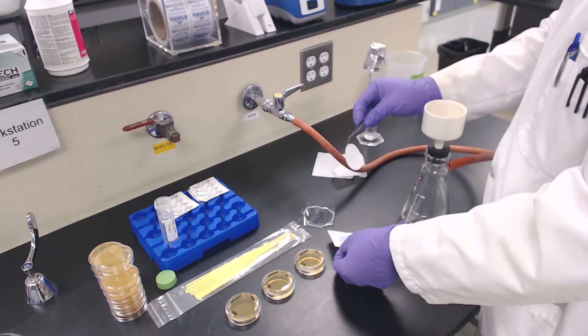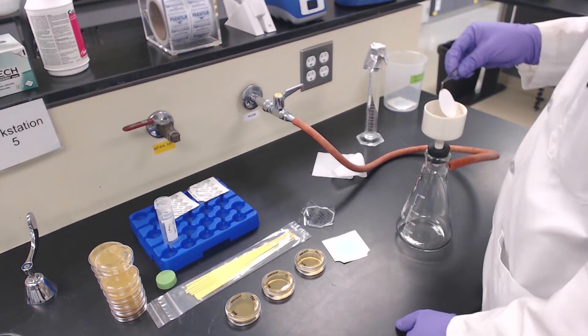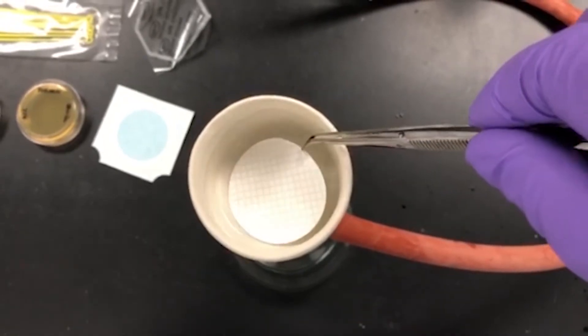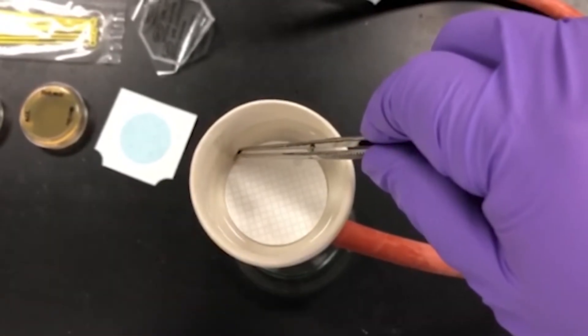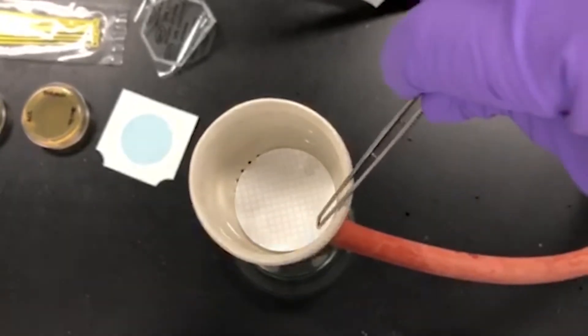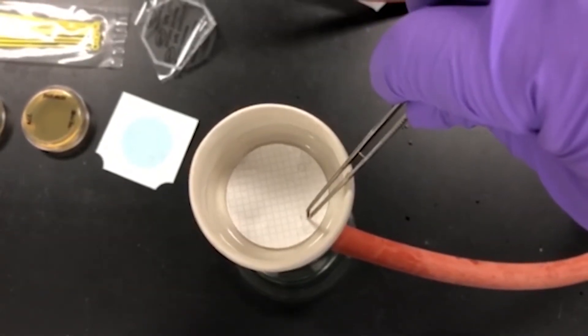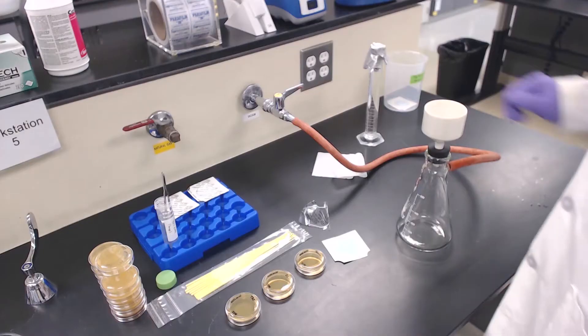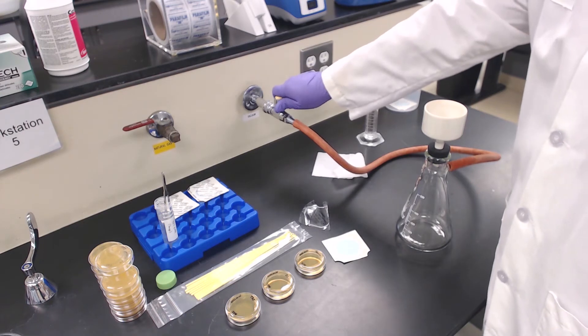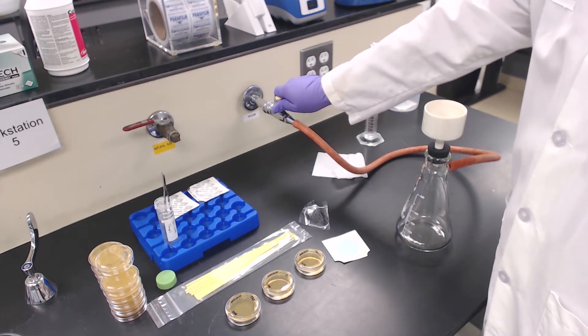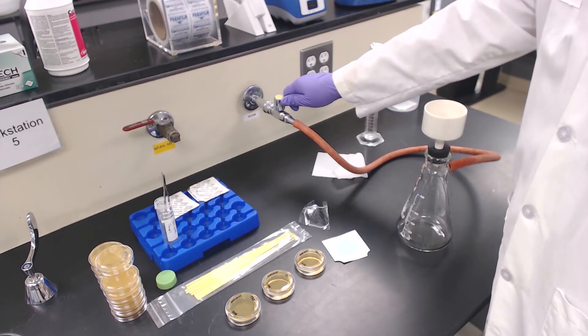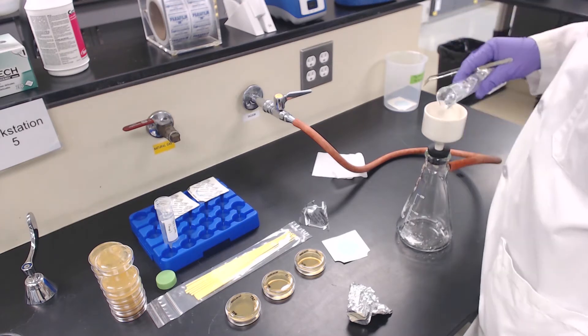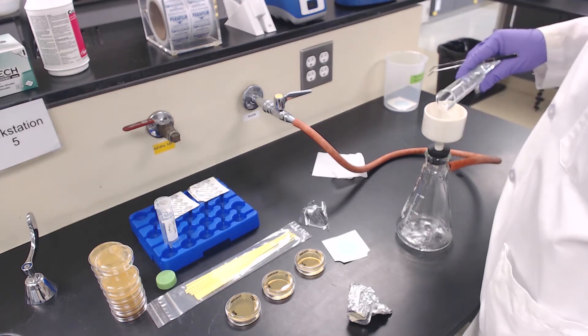Begin processing the first sample. Place a new sterile gridded filter paper in the Buchner funnel. Ensure that when you place the filter in the funnel it covers the filter holes. If any holes are showing, use the forceps to realign it in the center of the funnel. Slowly turn on the vacuum. Do not filter with the vacuum at maximum setting. Filter all 100 milliliters of your sample.